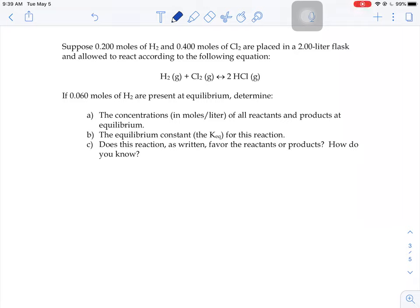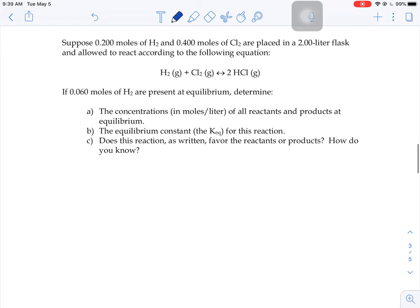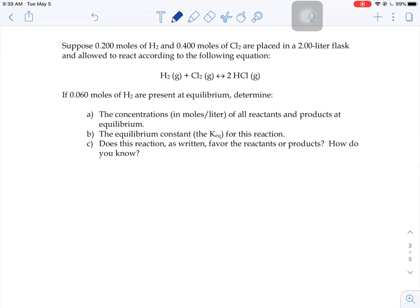Let's try one more of these ICE table examples. So this time we have some hydrogen and chlorine being put into a flask to make some hydrochloric acid. Let's do all the concentrations of all the chemicals we were given information about.